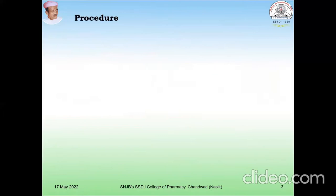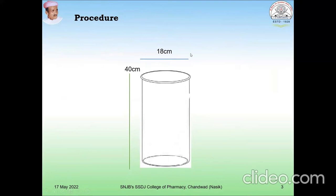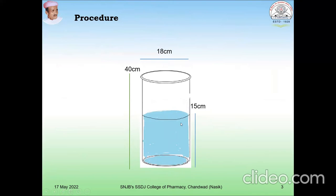Now here in this procedure, we have to use one container, also called a vertical flexiglass cylinder. The height of the cylinder is 40 cm and the diameter of the cylinder is 18 cm. For rat and mice, the dimensions vary. Then fill this cylinder with water up to 15 cm, and the temperature of that water should be maintained at 25 degrees centigrade.